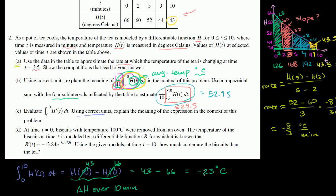This gives us negative 23 degrees Celsius. So our change in temperature is negative 23 degrees — our temperature has gone down 23 degrees Celsius over the course of the first 10 minutes. So that is part C.